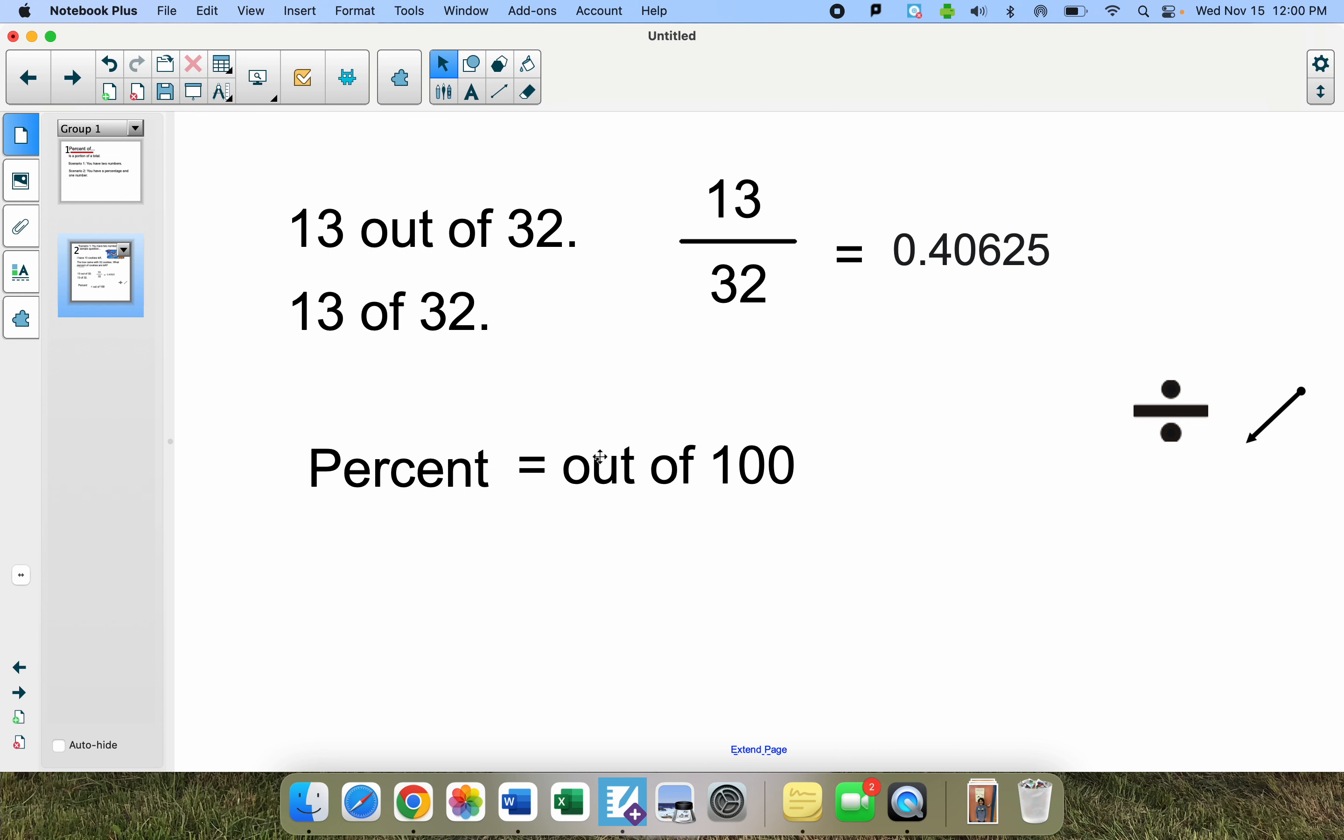So in order to change a decimal, which we have up here, into a percent, you just have to take that decimal and multiply it by 100. It's that easy. If you can figure out what the decimal is, then you multiply it by 100.